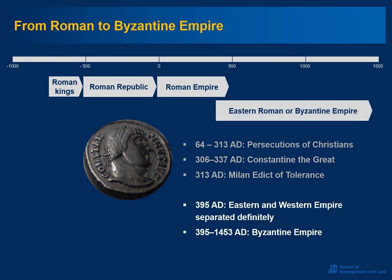The late 4th century also saw the definitive separation between the Western and the Eastern Roman Empires. In the following decades, the Western Roman Empire was to collapse in the turmoil of the migration of peoples, although only to be revived later as a powerful idea that shaped medieval politics. In the East, however, the Roman Empire continued to exist for roughly another millennium, even though it was gradually pushed back by the Arabs and the Turks.